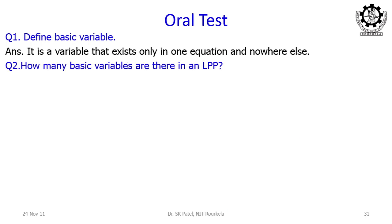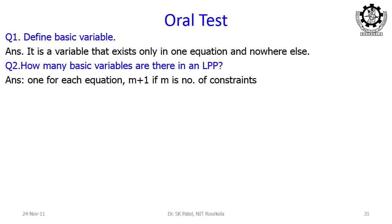Next question: how many basic variables are there in an LPP? In any LPP, m is the number of constraints, so there will be m equations. And for the objective function, there will be one equation. So in total there will be m+1 equations, and every equation will have one basic variable. Therefore, there will be a total of m+1 basic variables.